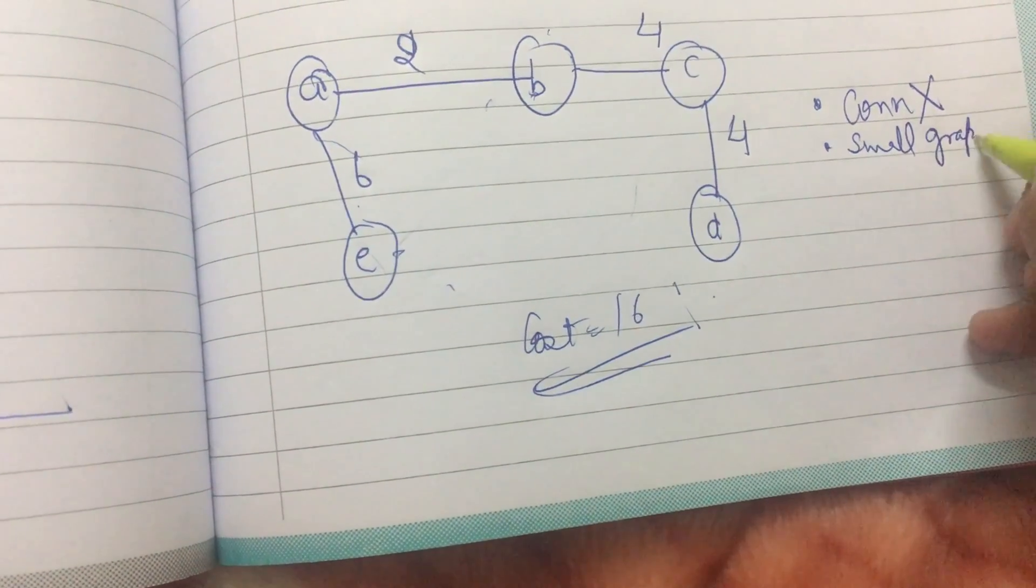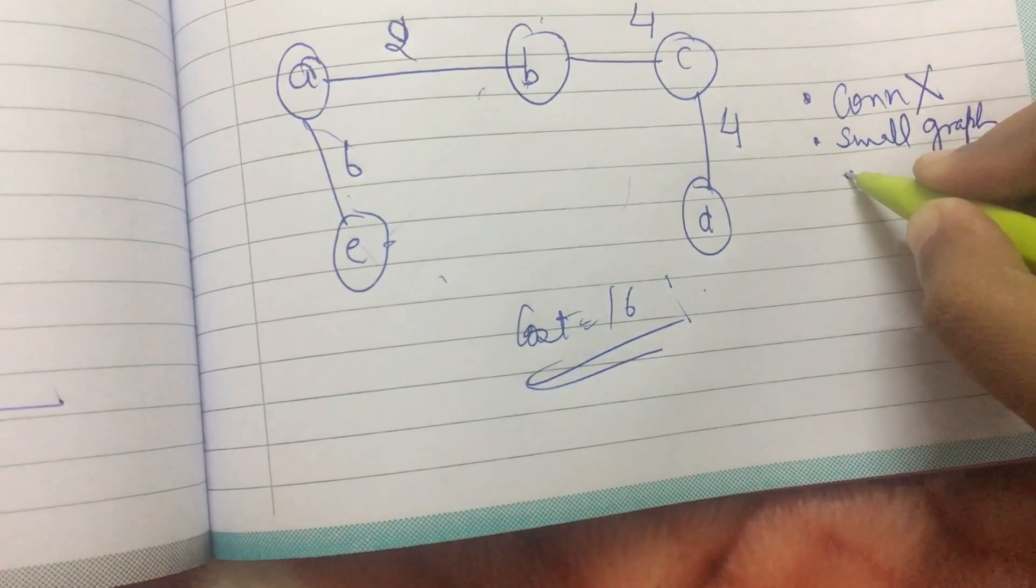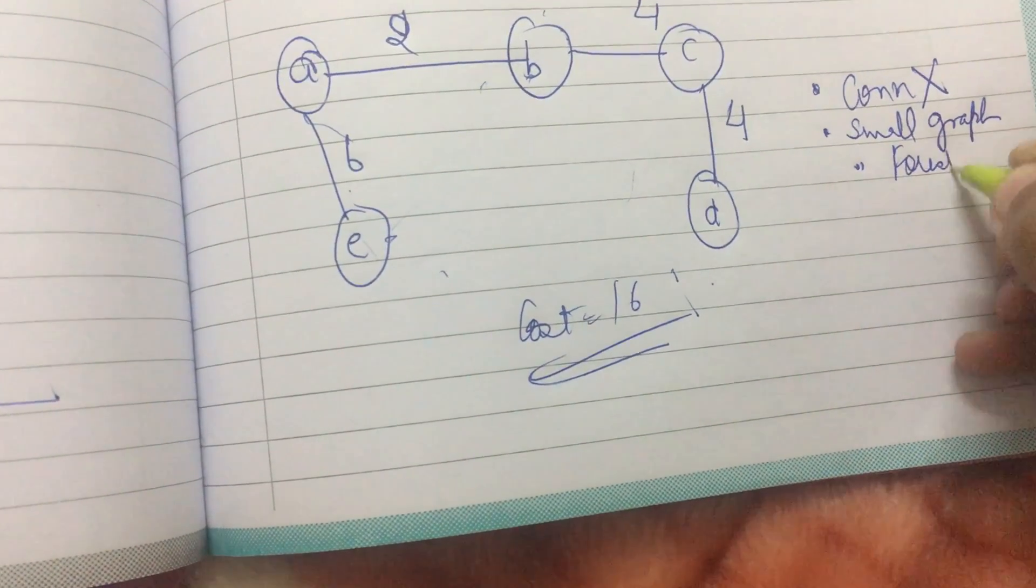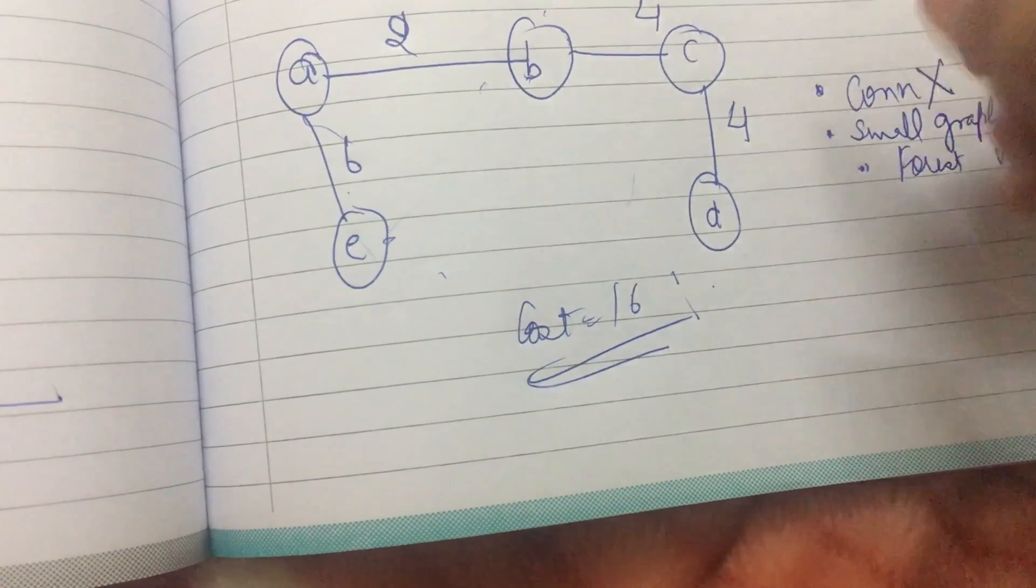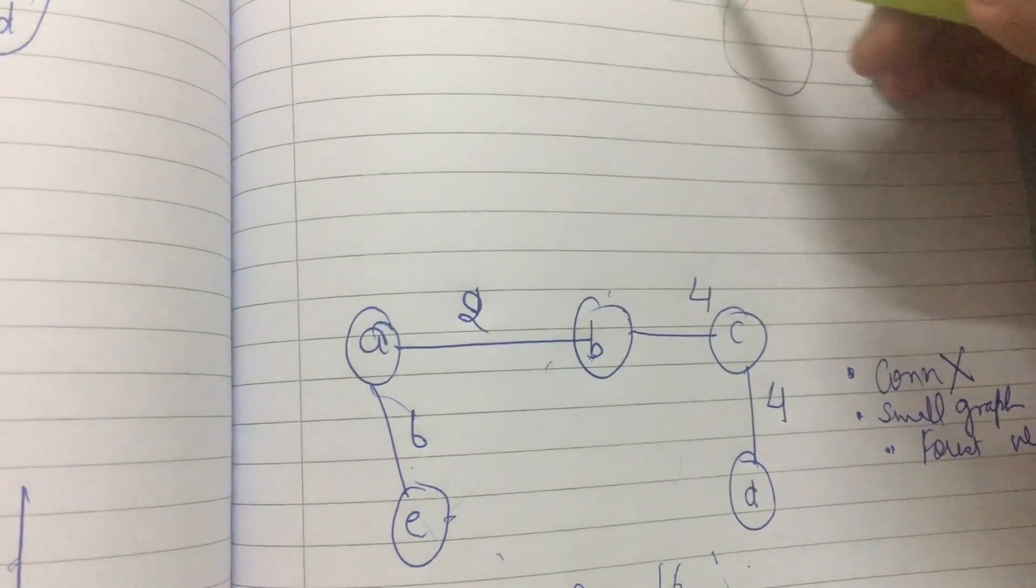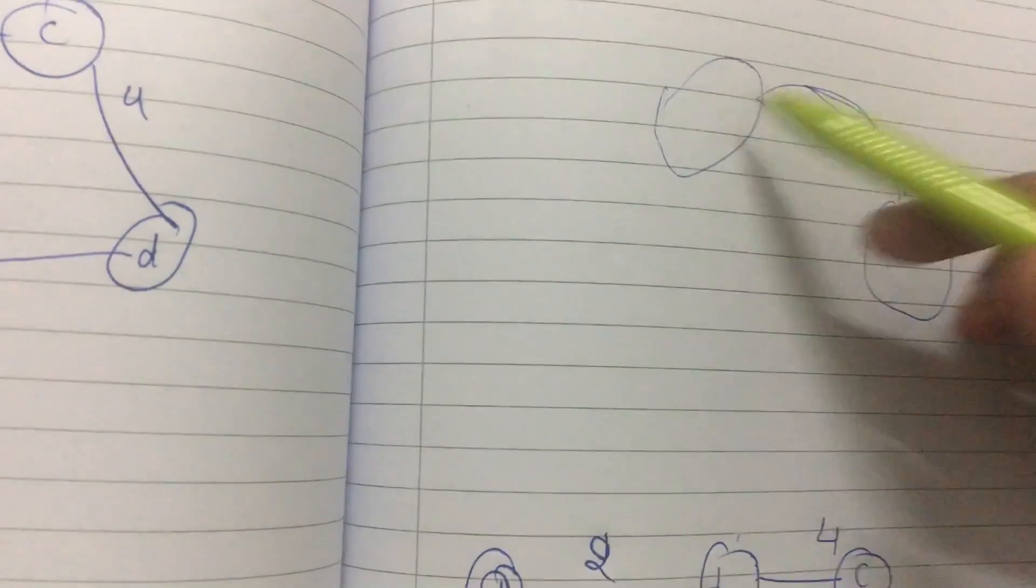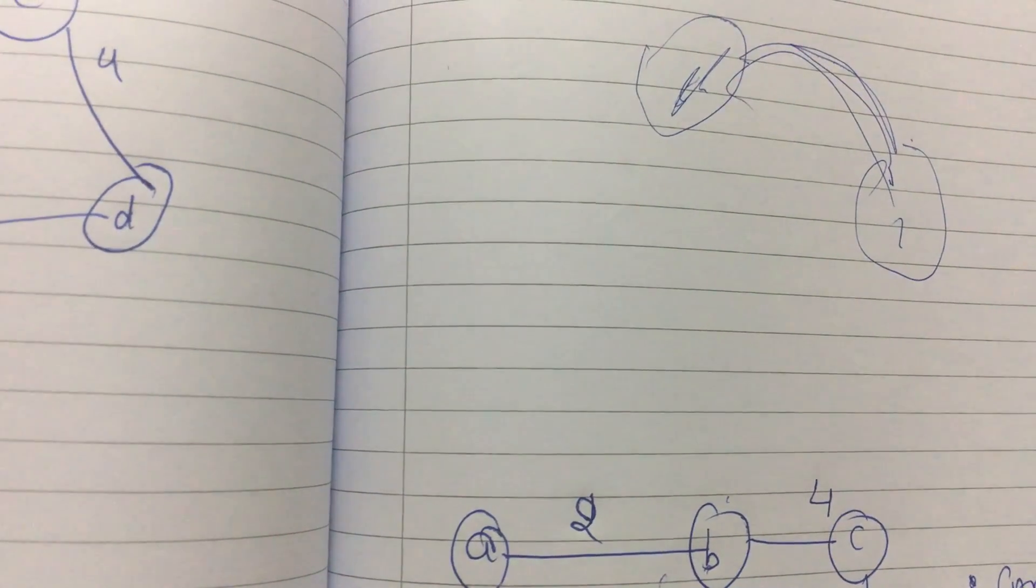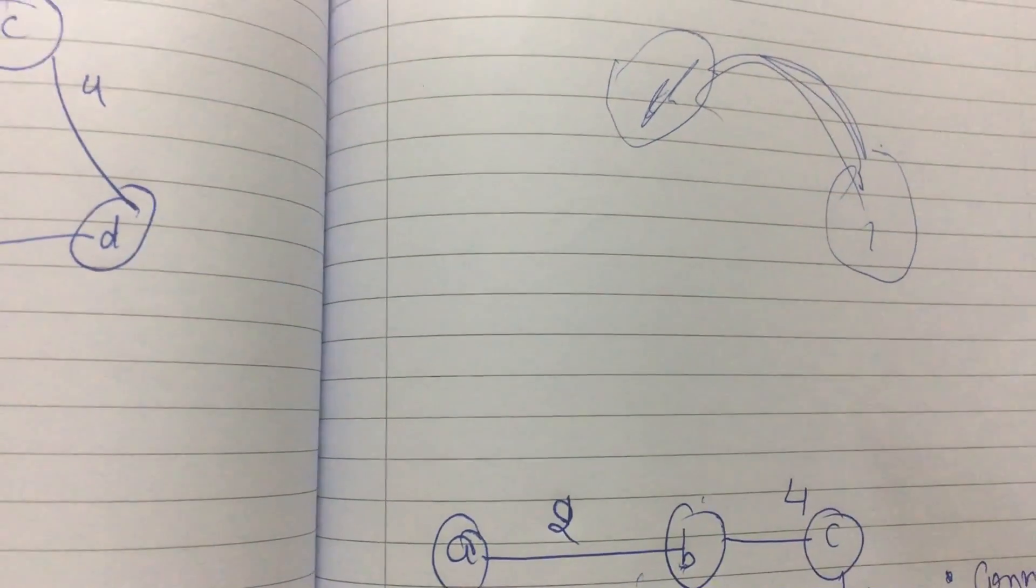Thirdly, the graph is constructed in the forest way. Forest way means how is the forest scattered: something is scattered here, something is scattered here, and then they are connected by something. Something is scattered here and here and then they are connected. So that is how the forest is formed.